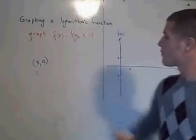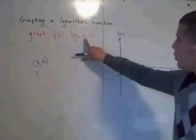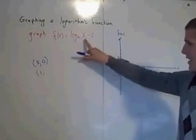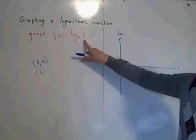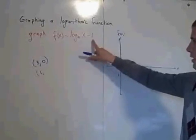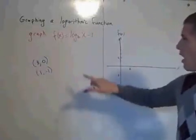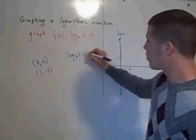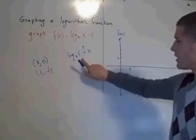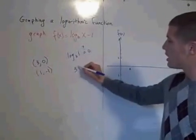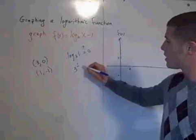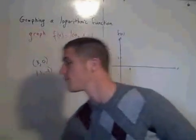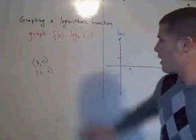Another value for x you might choose would be 1. Because the log base 3 of 1 is 0, and 0 minus 1 is negative 1. Now, why is the log base 3 of 1 equal to 0? Because this is asking 3 to what power equals 1? Well, that power is 0. 3 to the 0th power equals 1 because of the zero power property.